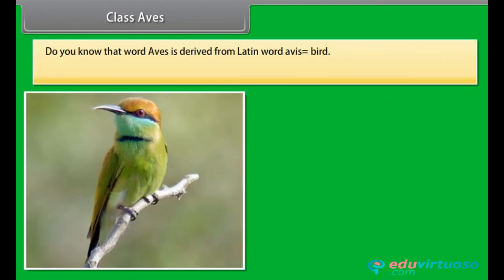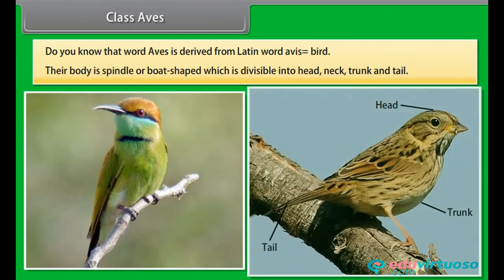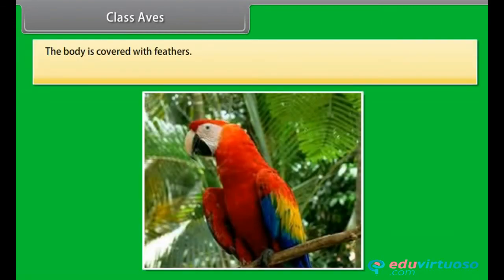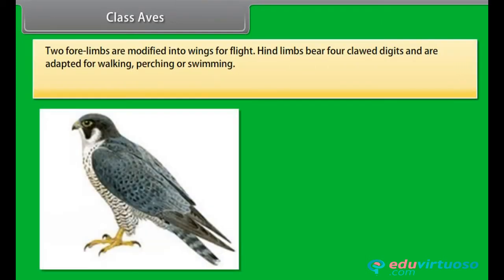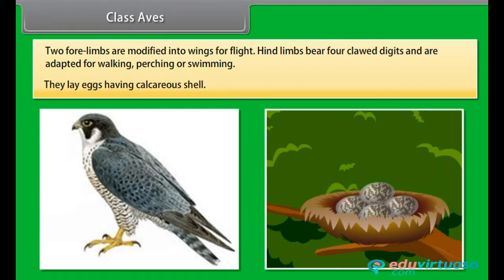Class Aves. The word Aves is derived from Latin word avis, meaning bird. Their body is spindle or boat-shaped, divisible into head, neck, trunk, and tail. The body is covered with feathers. They are warm-blooded animals. Their heart is four-chambered. They breathe through lungs. Two forelimbs are modified into wings for flight. Hindlimbs bear four clawed digits and are adapted for walking, perching, or swimming. They lay eggs having calcareous shell.